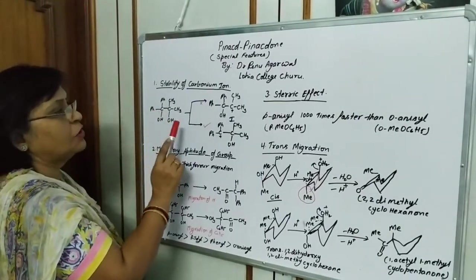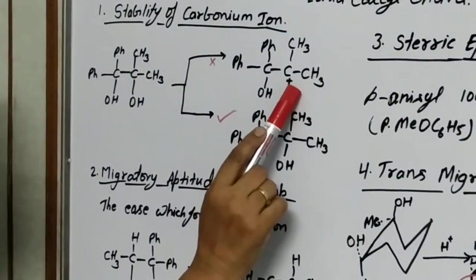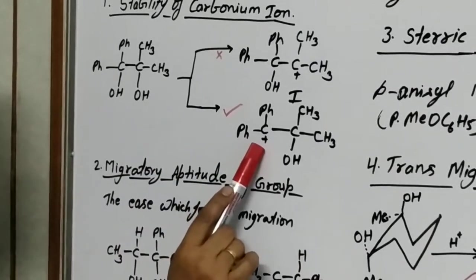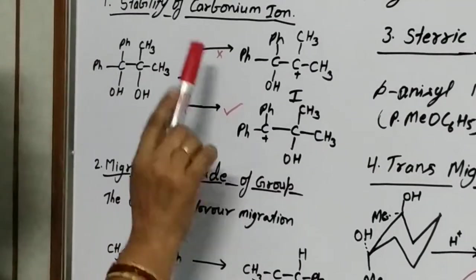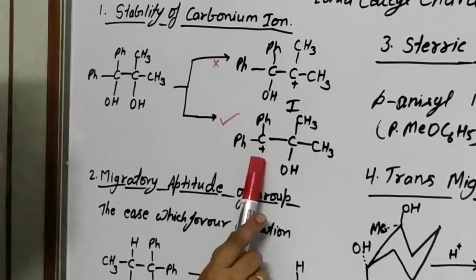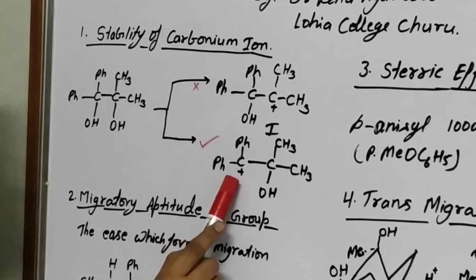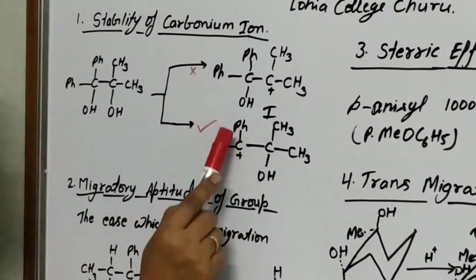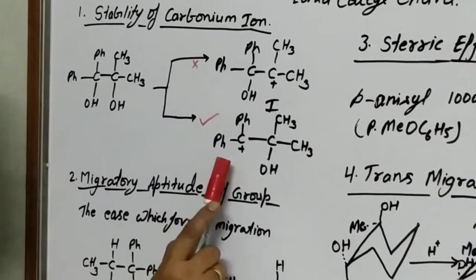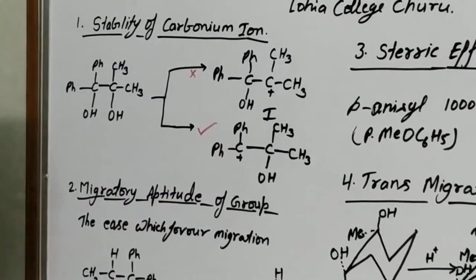There are 2 ways of formation of carbonium ion in this compound. If this hydroxy group is removed, then carbonium ion 1 will produce. If this other hydroxy group is removed, then carbonium ion 2 will produce. Out of these two, carbonium ion 2 is more stable in comparison to 1 because in this there are 2 phenyl groups, so this carbonium ion can be stabilized by resonance on phenyl groups, whereas in carbonium ion 1 this is not possible. Therefore, this carbonium ion will produce in the reaction and the product will be according to this.